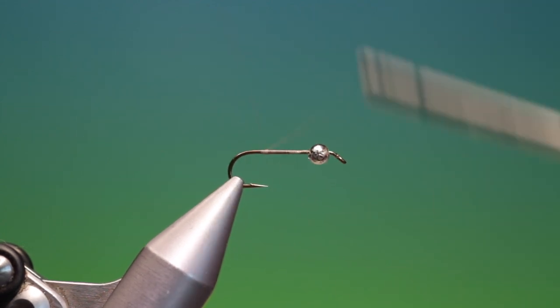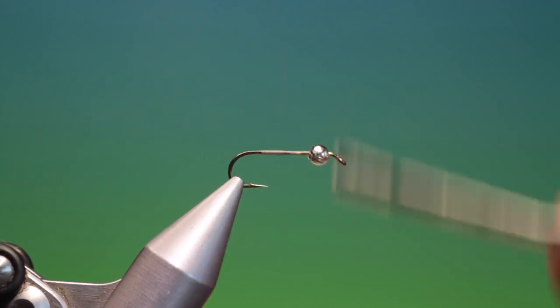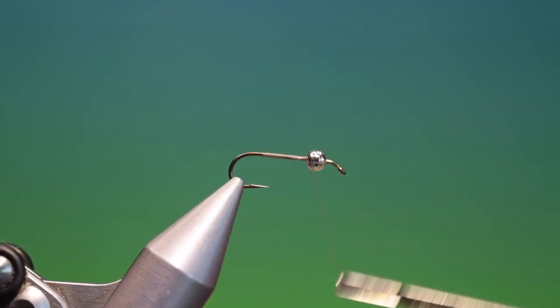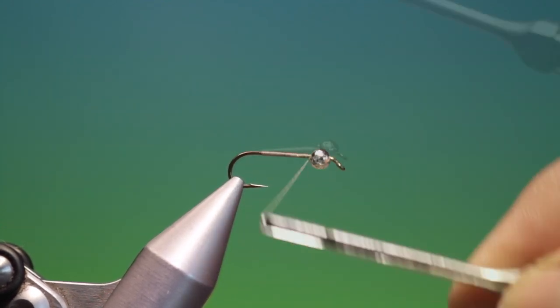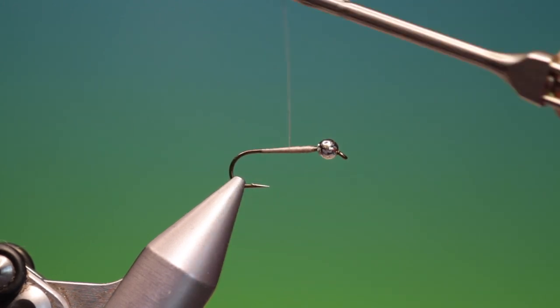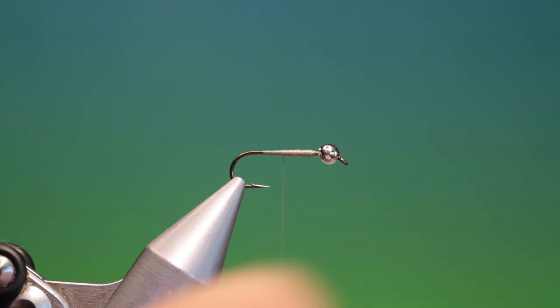Then I want to build up a taper that increases towards the thorax for the foundation of the moose mane body. So once we've built up that body foundation we go back to about there.